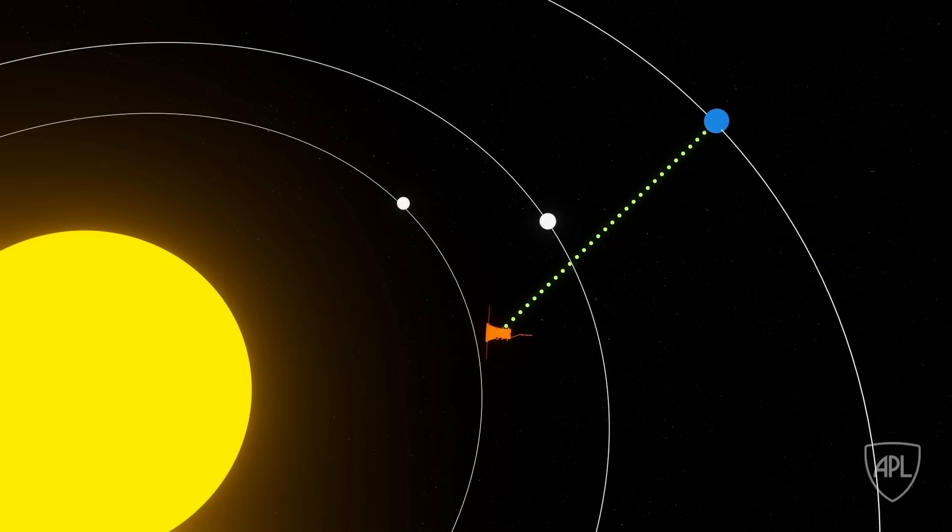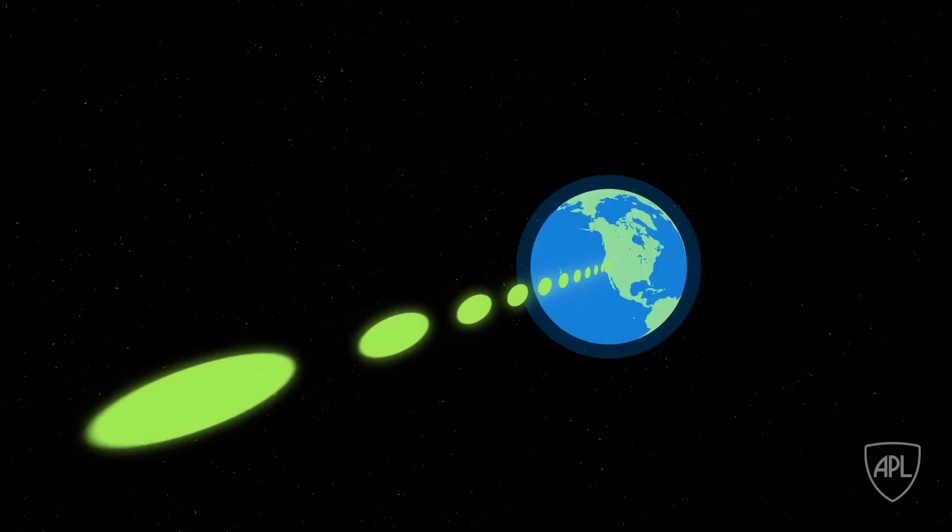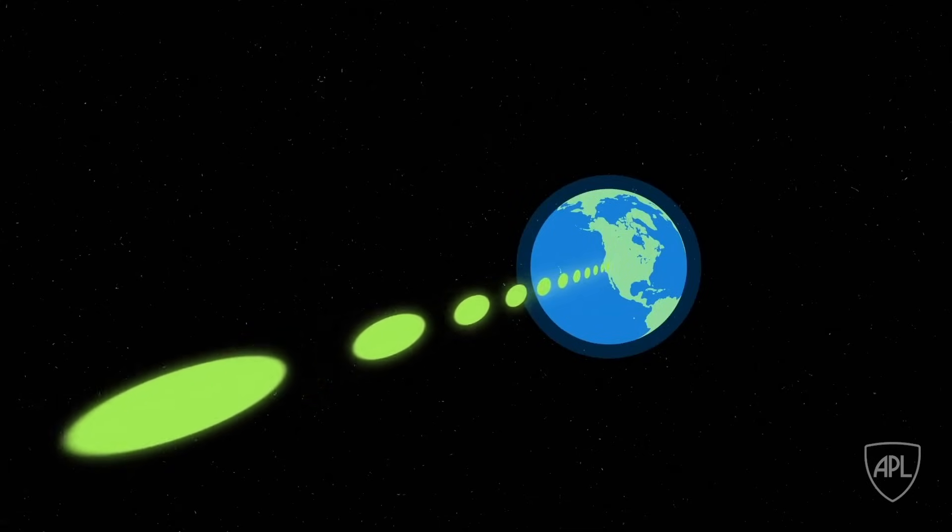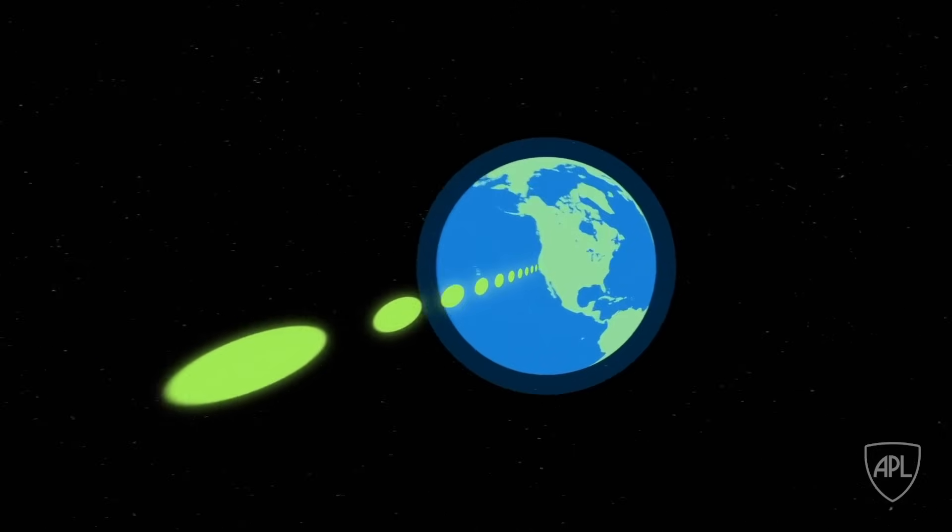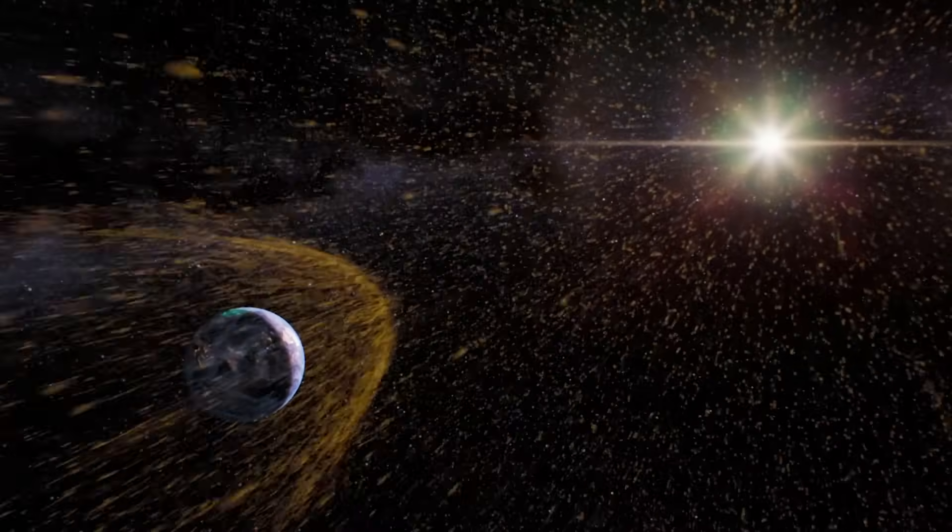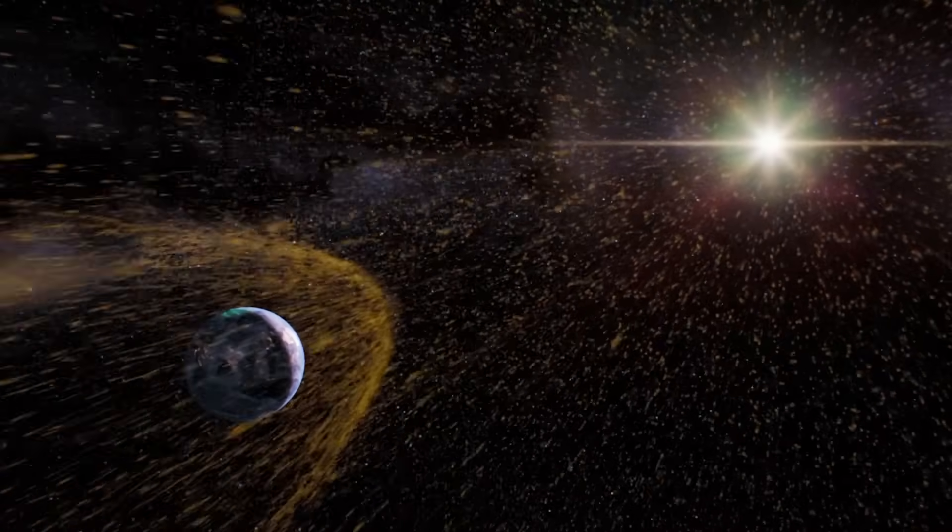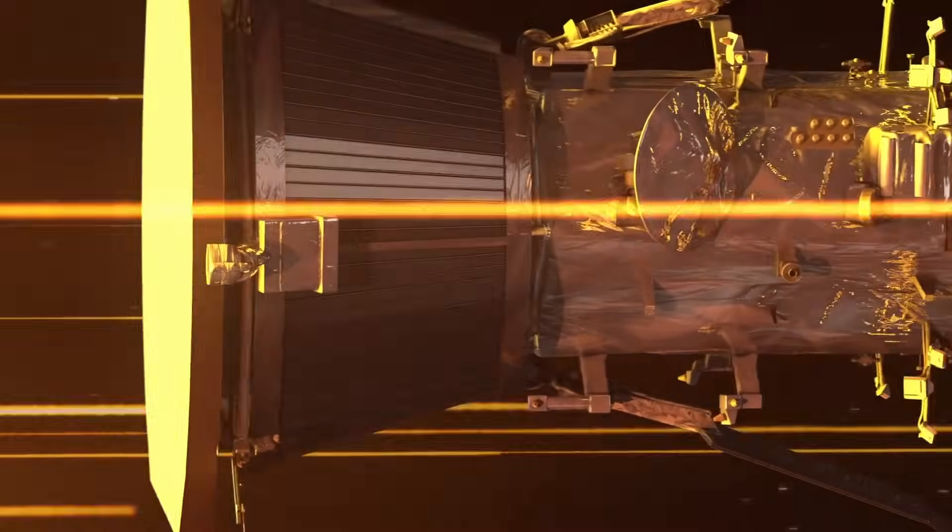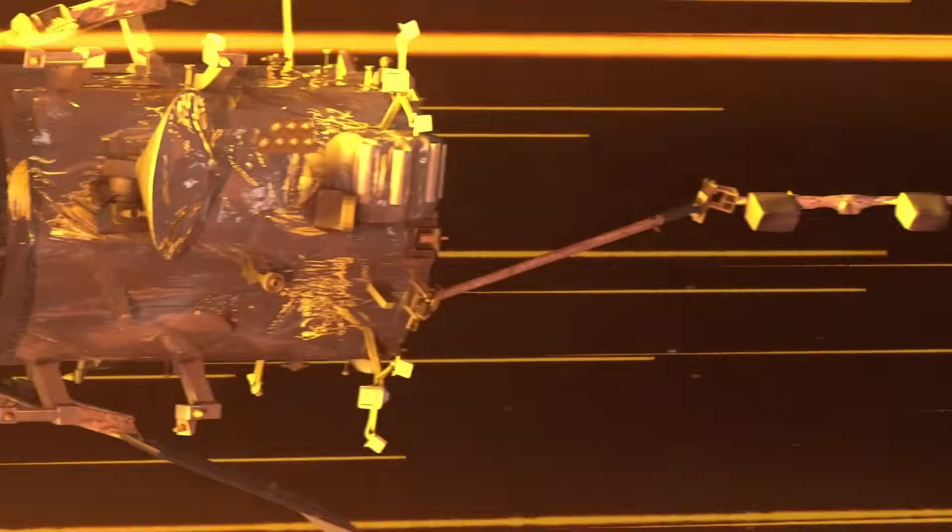Detailed scientific data from this close approach are anticipated to be transmitted over the following weeks and months, with initial analyses potentially available by late January 2025. The Parker Solar Probe will continue its mission with additional perihelia planned for March and June 2025, maintaining its close distance to the sun and further contributing to our understanding of solar phenomena.